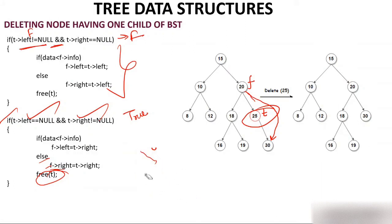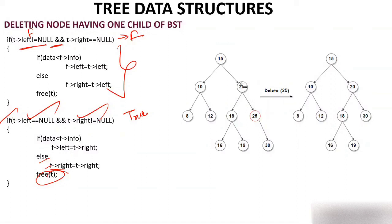The next figure clearly shows that 20's right child is now 30. This is what I already told you in the first slide — when you delete a node with one child, the parent directly links to that child.